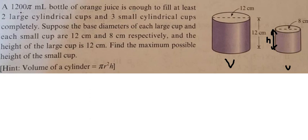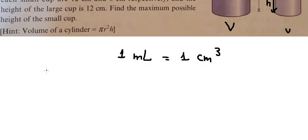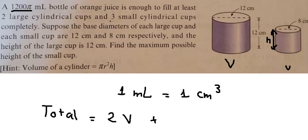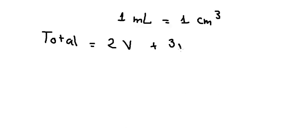We know that the total volume is 1200π milliliters, and one milliliter equals one cubic centimeter. So the total equals 2 capital V plus 3 small v, since we have two large cups and three small cups.